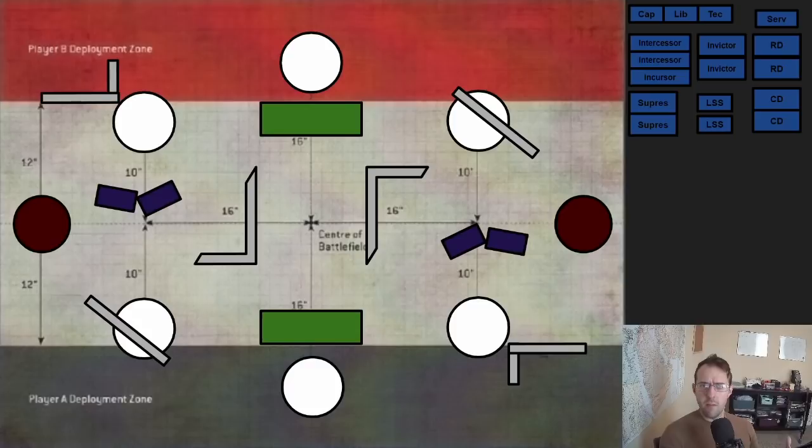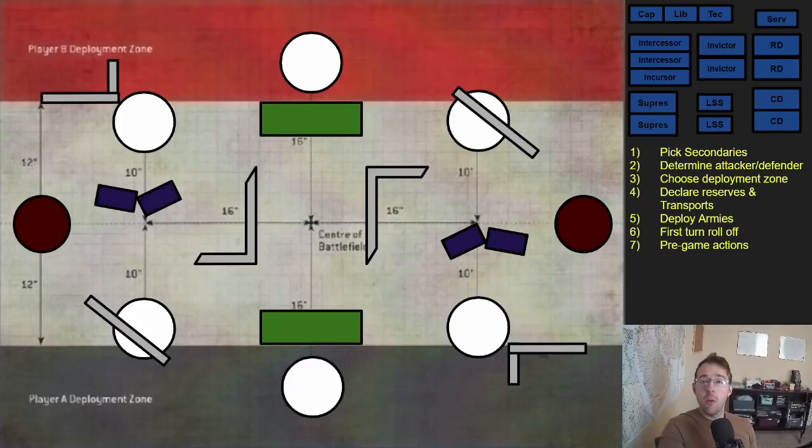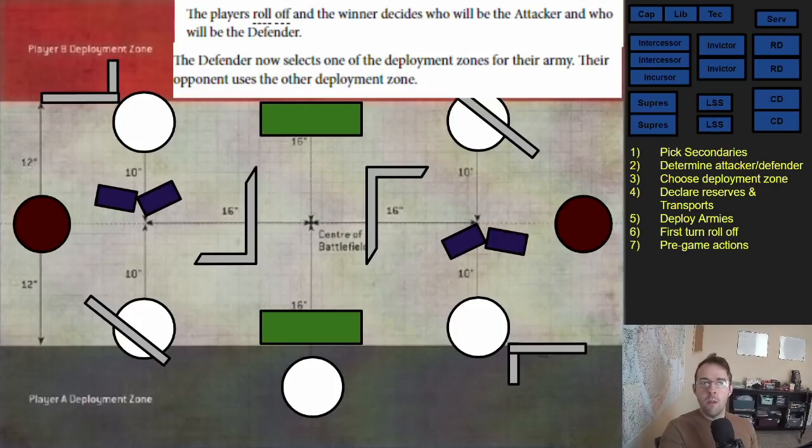Now let's look at how the deployment phase actually works. The deployment phase starts with both players picking secondaries at the same time and revealing them simultaneously. Because we've analyzed the opponent's list, it's no surprise when they take raise their banners high, oath of moments, and engage on all fronts. Then step 2 is determining the attacker and defender. Both players roll off and then the person who gets the highest roll decides who will be the attacker and who will be the defender. The defender then chooses the side they want and will be the first person to deploy. The person who wins this roll off gets to choose who deploys first or second. That's very different than step 6, rolling for who goes first.